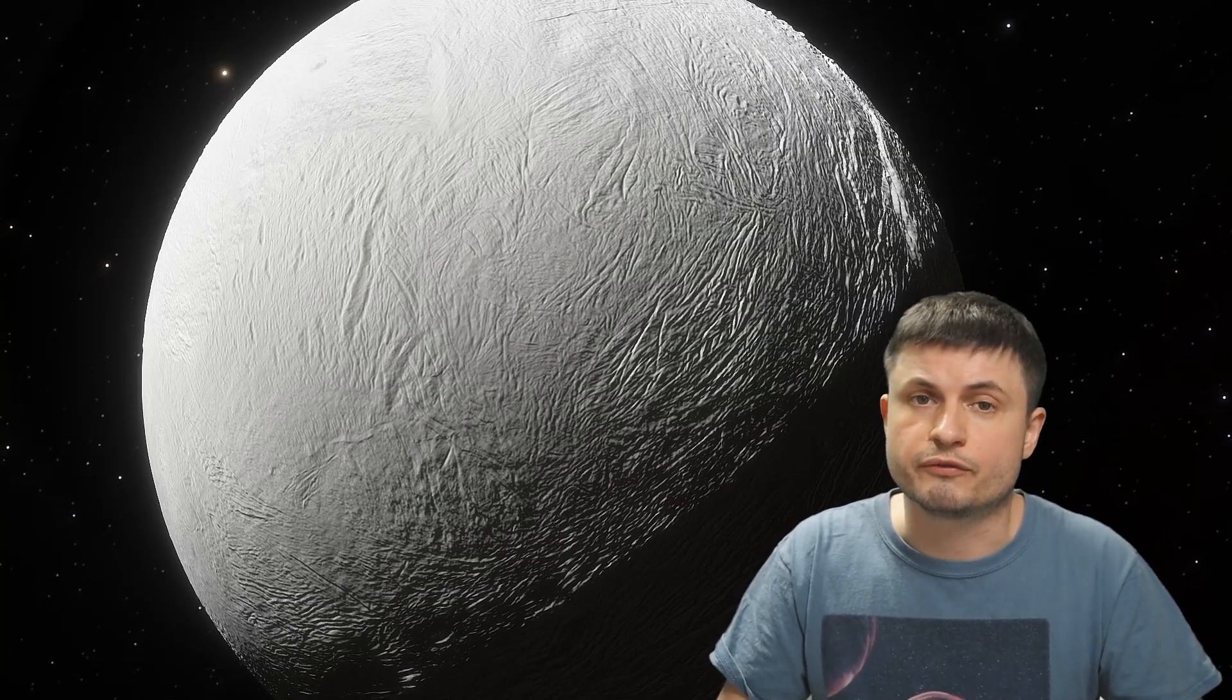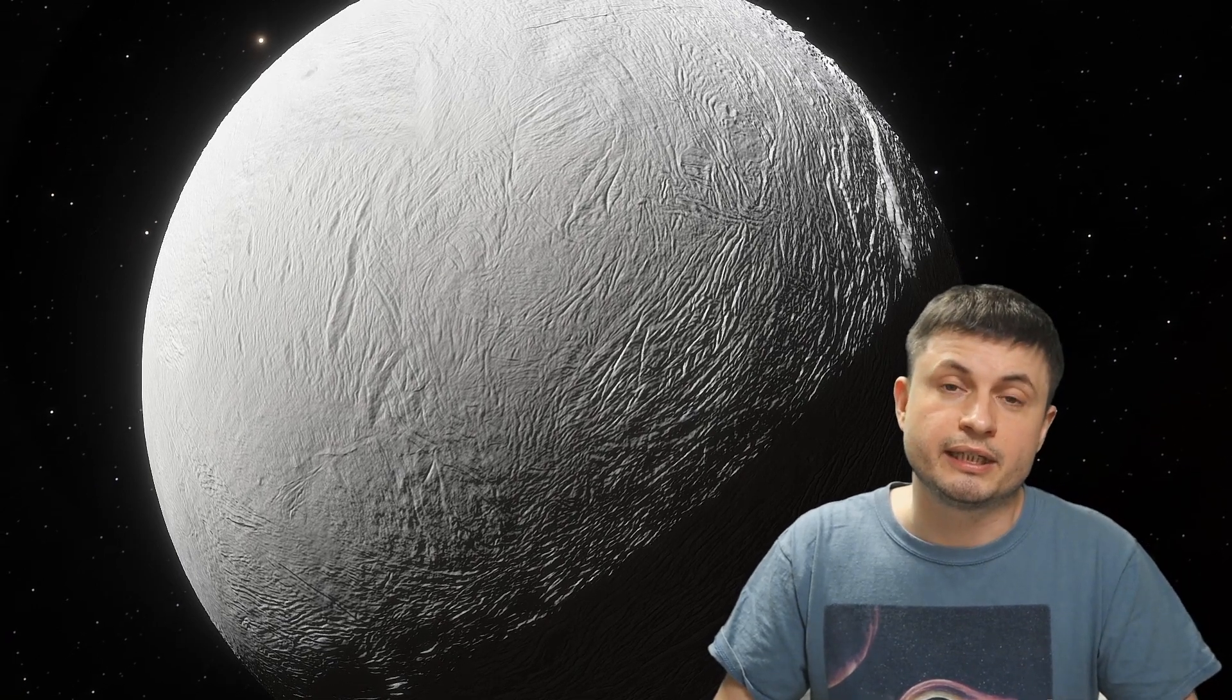But does it exist on other places like Enceladus, Titan, and so on? And so all of this water that forms the surface of Enceladus, for example, all of this ice you see here, that's very different from the ice on Earth.